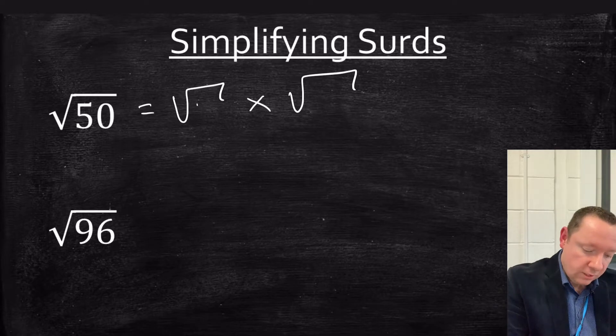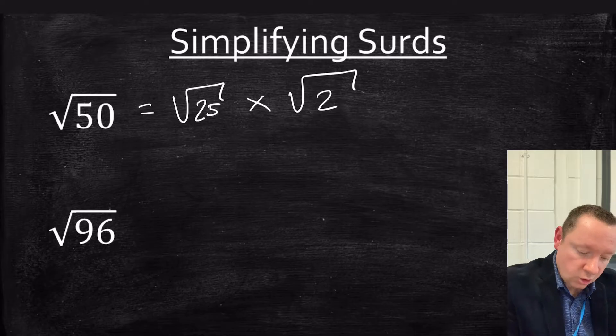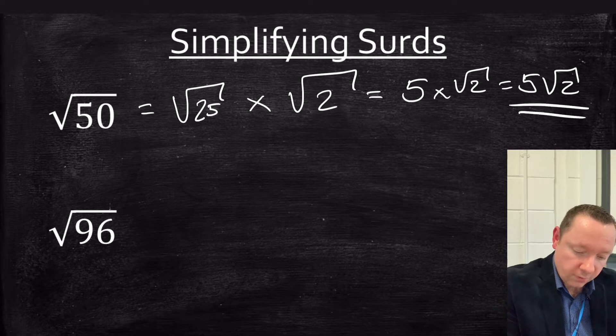So 25 goes into 50 so I can write that as root 25 times 2. I then just square root my 25 to get 5 times root 2. So that is 5 root 2 simplified.